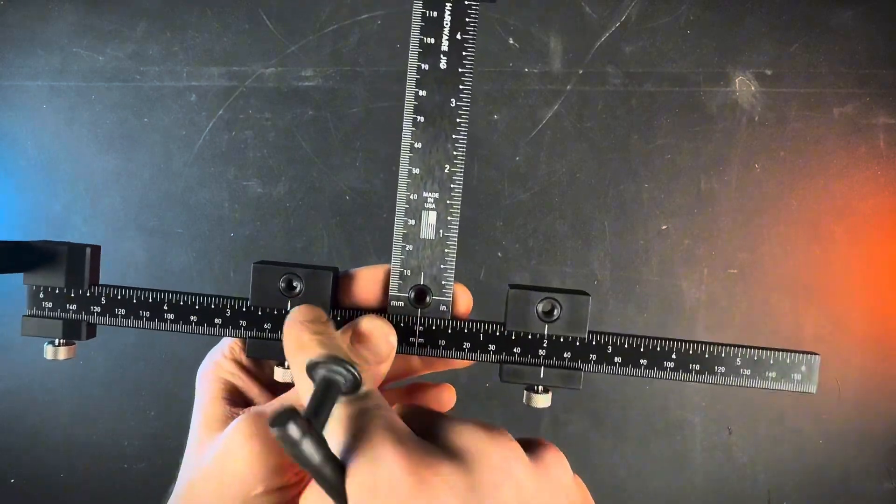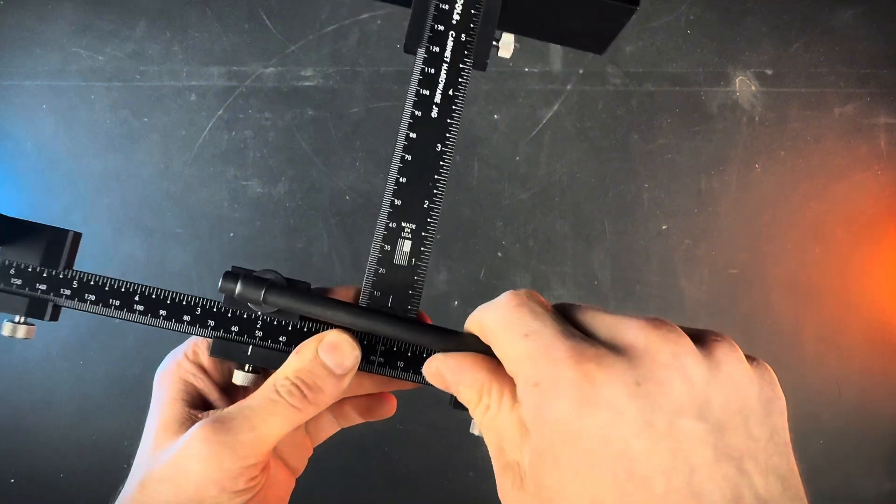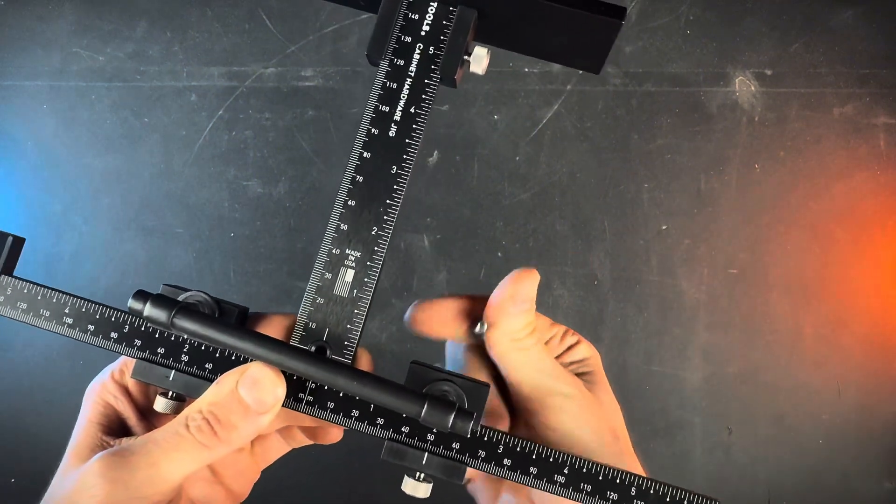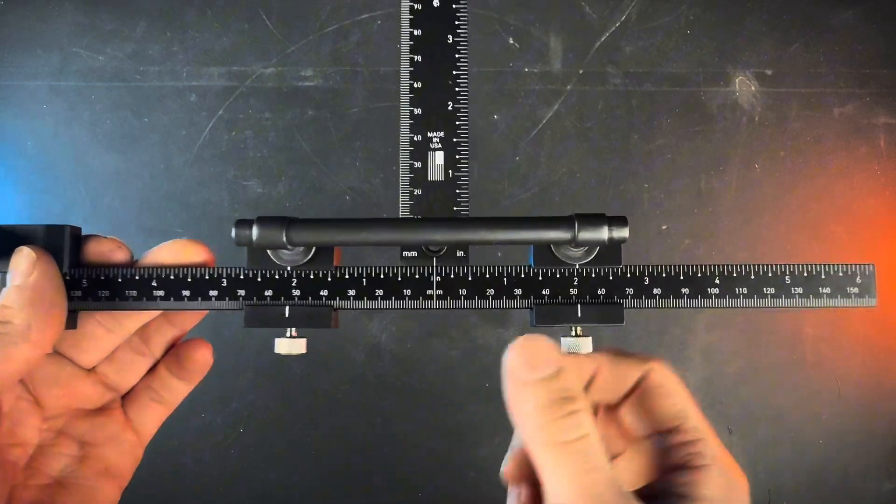First you're going to want to make sure these sliders are spaced out correctly. You could measure the distance between the holes or you could just set it on top and put some screws in from the back. As you can see, they're pretty well spaced out. Go ahead and center those up on the center here and make sure to tighten them down.